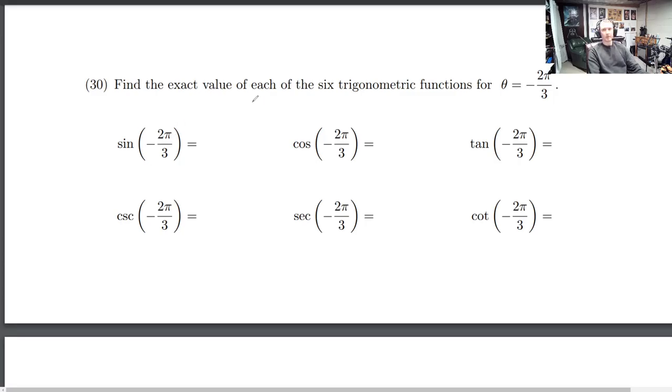All right, find the exact value of each of the six trig functions for the angle negative 2π over 3. So it's a negative angle, and it's not in quadrant 1. So let's find the reference number and we're going to take that instead, and then we'll add negative signs where appropriate.